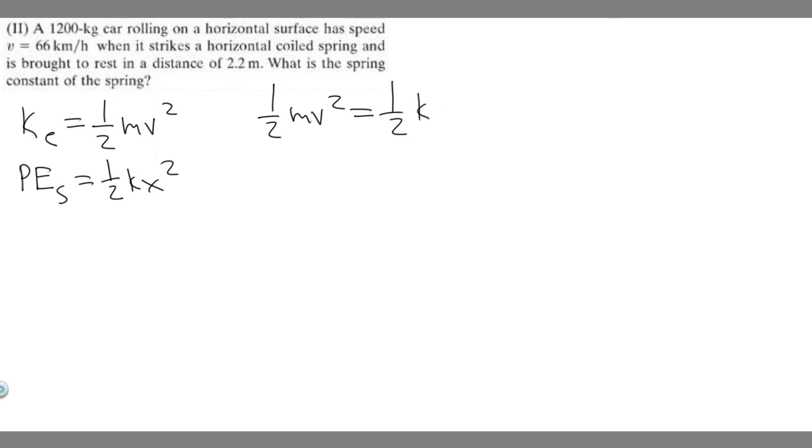So one half mv squared equals one half kx squared. We just have to solve for k. We have the mass of the car, the velocity of the car, we have the distance. Notice how the one half cancels, so mv squared equals kx squared.